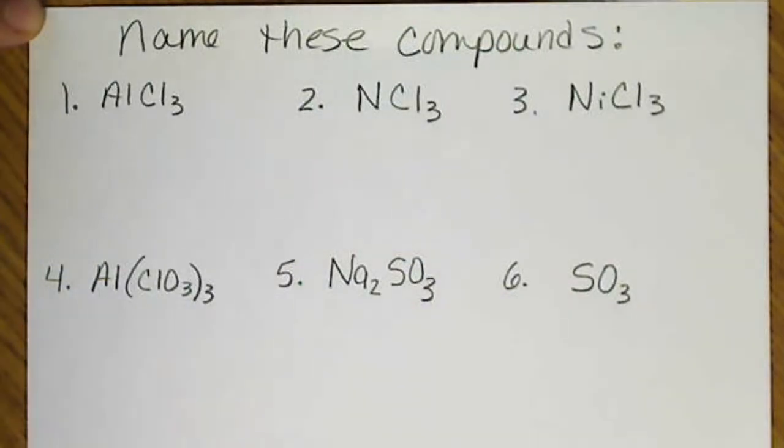To practice naming compounds, we're going to use the periodic table to see what type of compound we have. If we have two non-metals, we're going to use Greek prefixes. If we have a metal and a non-metal, we have to see if the metal needs a Roman numeral.